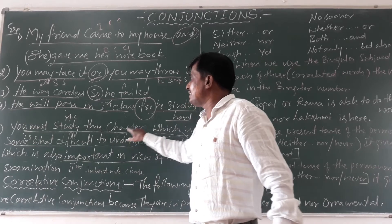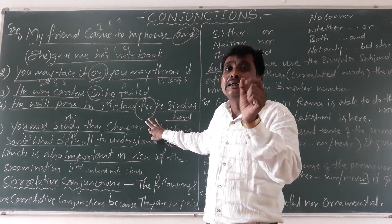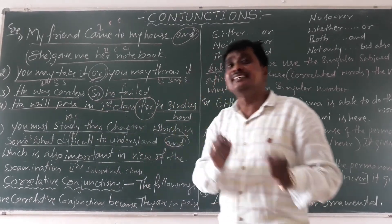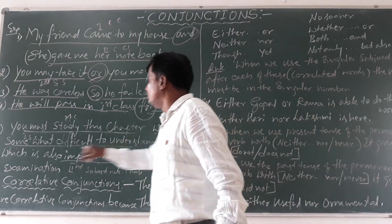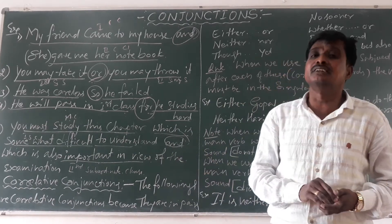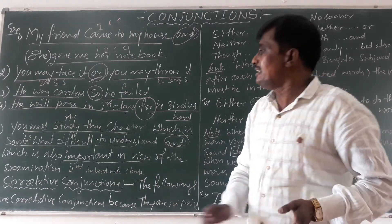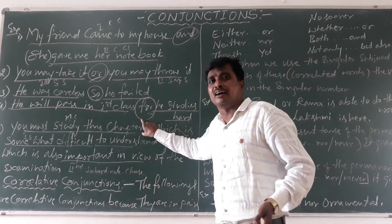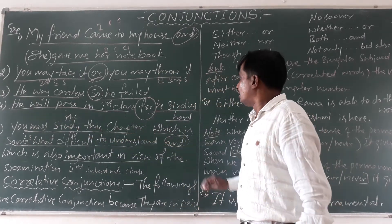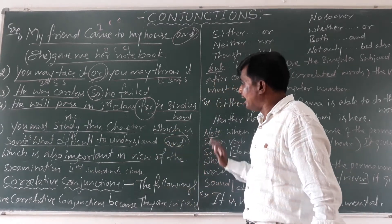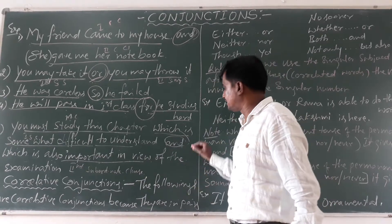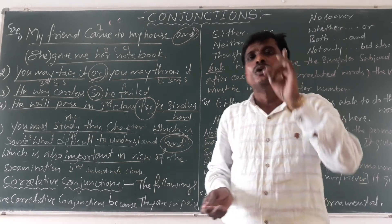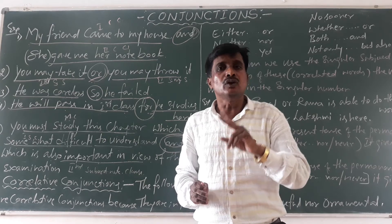So, 'you must study this chapter' is the main independent clause. The first subordinate clause and the second subordinate clause join together with the main clause. The coordinate conjunction 'and' here joins one main clause and two subordinate clauses.